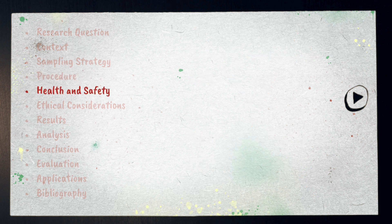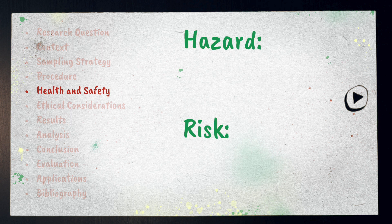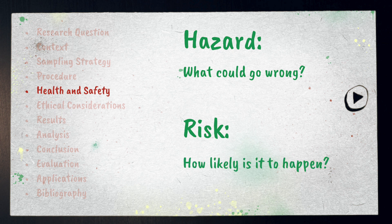Health and safety should be included. Consider the list of possible hazards — the things that could go wrong and harm you or someone else — and the risk or likelihood of each hazard occurring. You should discuss what you will do to prevent or minimize the chances of anyone getting harmed.